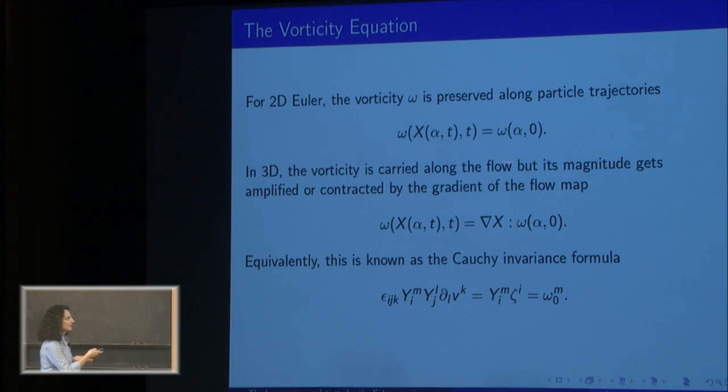When dimension d equals two, we have this nice formula that says that the vorticity ω, which is the curl of the velocity, is preserved along the particle trajectories. The vorticity stays constant in time. In 3D, things are a little bit different. Vorticity is still carried along the flow, but the magnitude of the vorticity changes by this factor. It can either go up or down in magnitude by this factor involving the gradient of the trajectory mapping.